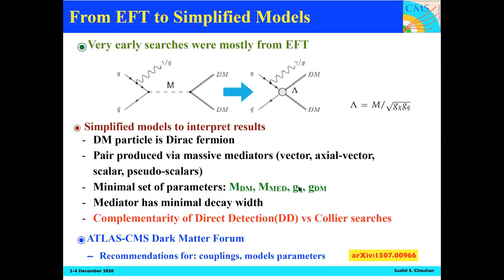In early LHC searches, we started with EFT — effective field theories — where the mediator masses are assumed to be very high, but this has limitations. Now we work with simplified models to interpret dark matter searches at the LHC. The dark matter particle is considered a Dirac fermion, pair produced by a massive mediator that could be vector, axial vector, scalar, or pseudo-scalar type. The minimum parameter set includes mediator mass, dark matter mass, coupling to standard model, and coupling to dark matter. The mediator has minimum decay width roughly less than 10%.